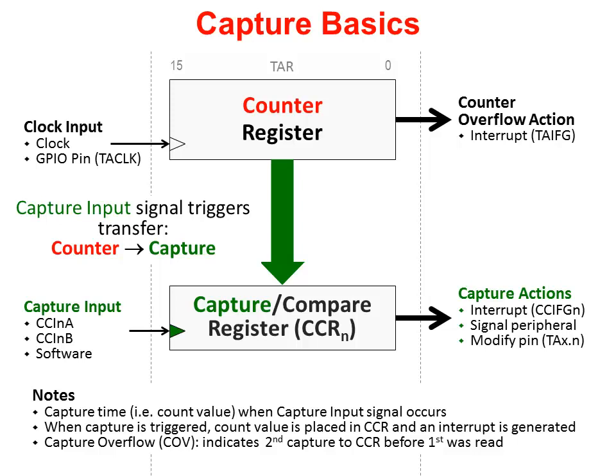When a capture occurs, besides capturing the counter value, the capture mode can also trigger further actions: one, a CPU interrupt can be generated; two, we can trigger another peripheral; and three, we can set or reset a pin. Timer A and B have multiple CCR registers, and each CCR has its own capture input signal. The capture feature provides a deterministic method of capturing the count value when triggered. While a capture is quite handy, there's another really useful feature of the timers that we'll look at next.